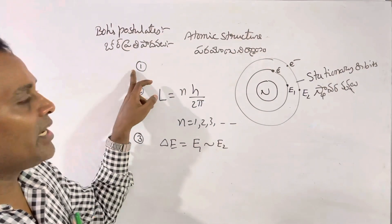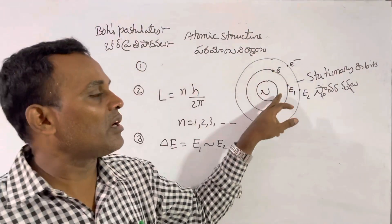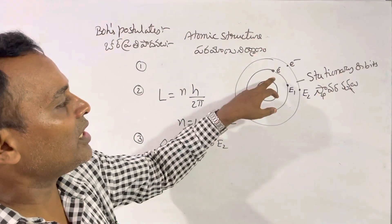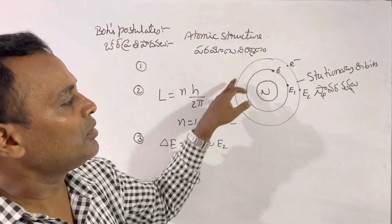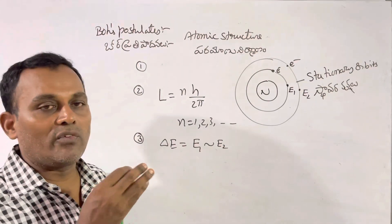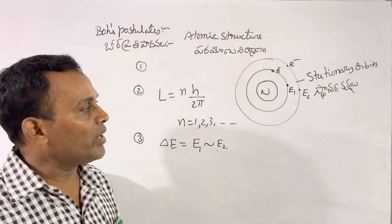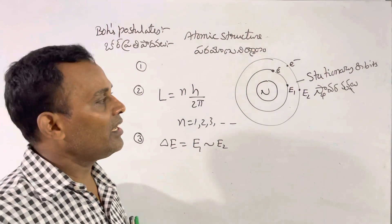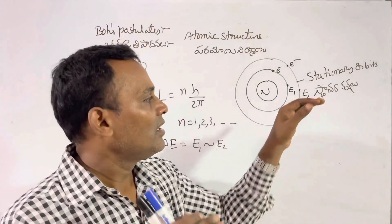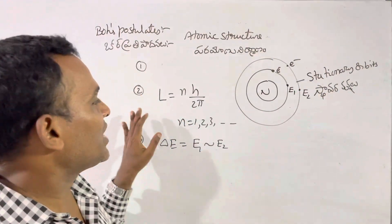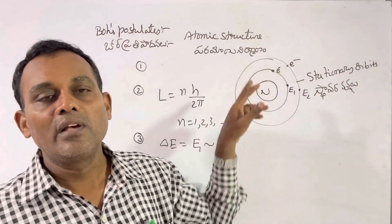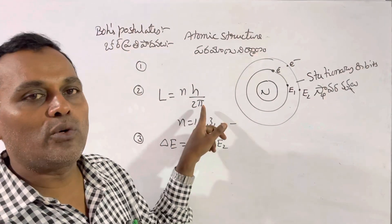To summarize: first, the electron revolves around the nucleus in a circular path. Second, the electron has constant energy when revolving in a particular orbit, and that's why the orbits are called stationary orbits. Third, the angular momentum of an electron revolving in a particular orbit is equal to the integral multiple of h by 2π, where n equals 1, 2, 3, etc.